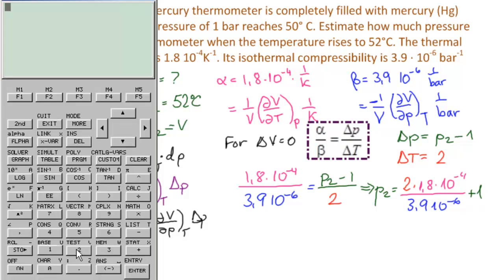So we have 2 times 1.8 EE minus 4 divided by 3.9 EE minus 6. I'm going to hit enter, and then I add the 1.